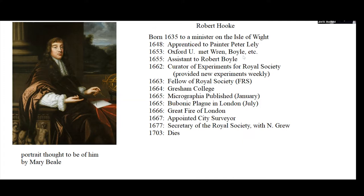By 1660 his reputation with Boyle was already quite impressive. 1660 was about the time the Royal Society was founded, and Boyle was brought in as one of the early members. Boyle then recommended that Robert Hooke become the Curator of Experiments. What that job meant was that at every meeting of the Society, Hooke was responsible for bringing in something new and exciting — a new discovery, a new thing he had looked at. He had been playing around with capillary action, was interested in astronomy, and had observations on stars and planets. For instance, he was the first to observe the red spot on Jupiter.